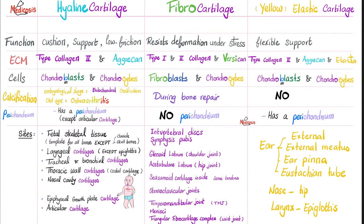On to today's topic: the comparison. Hyaline versus fibrocartilage versus elastic cartilage. The function of hyaline is cushion, support, and low friction — that's why you find it in joints at the articular surfaces. The word hyaline means clear, glassy, translucent. Fibrocartilage is very strong, fibrous, with many collagen fibers especially type 1 and 2, so they are very firm and resist deformation under stress.